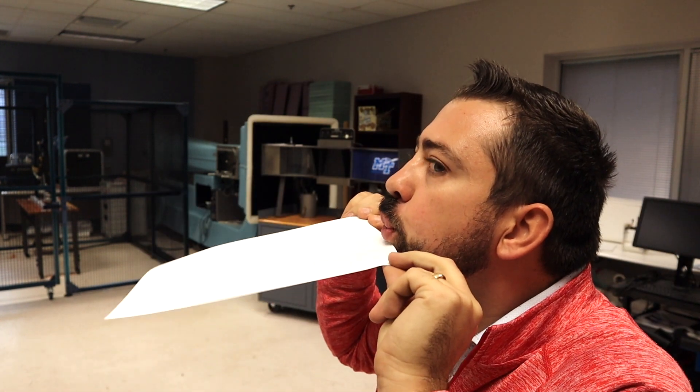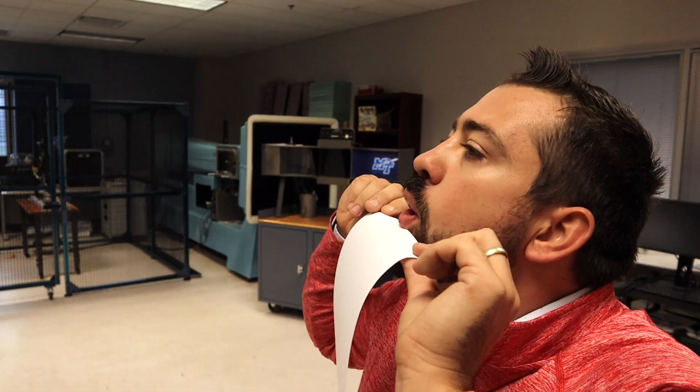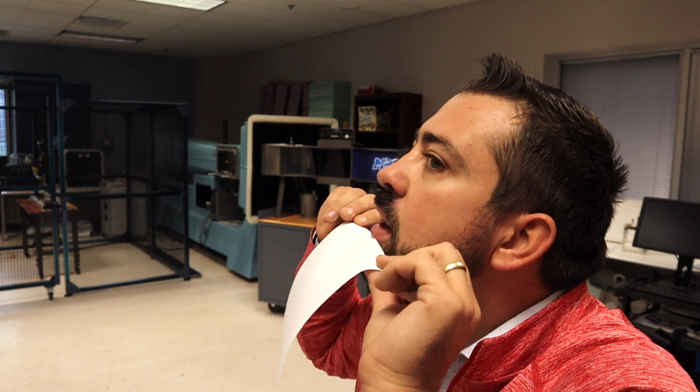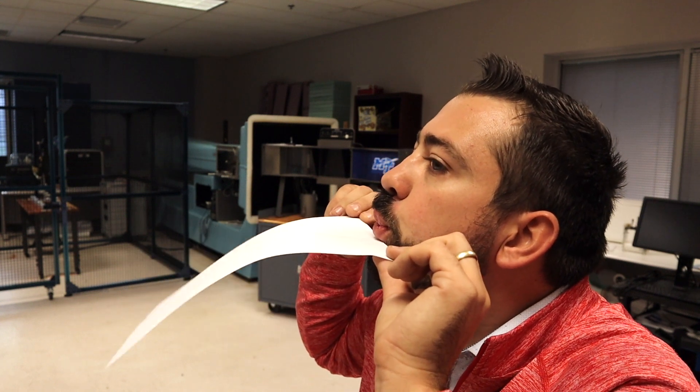You can see that as I blew across it, the paper jumped up, went perfectly flat, and drew up into the system. Let's do it one more time. Blowing across the top shows us Bernoulli's principle and how that causes pressure to decrease by increasing the velocity of the fluid, or in this case the air.